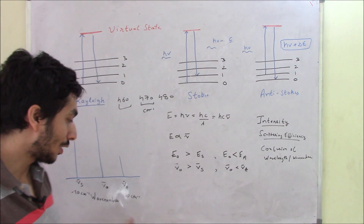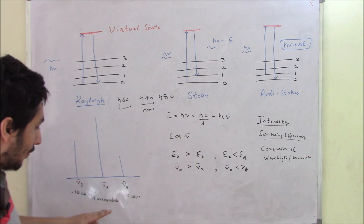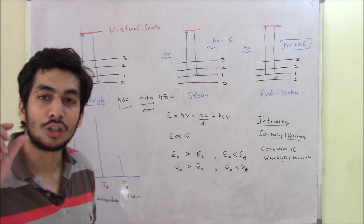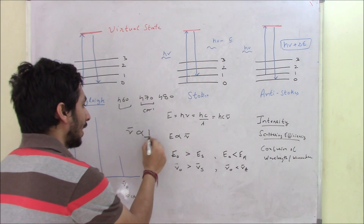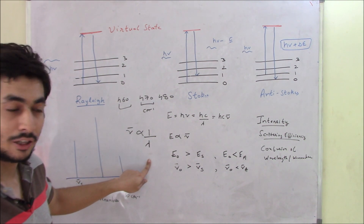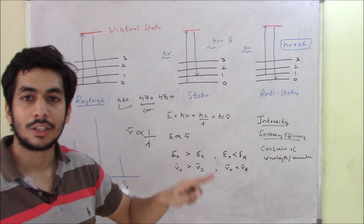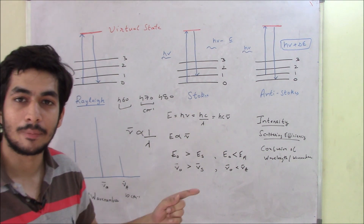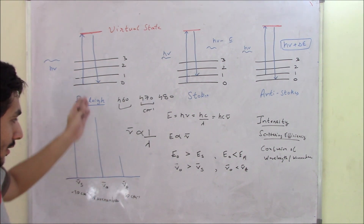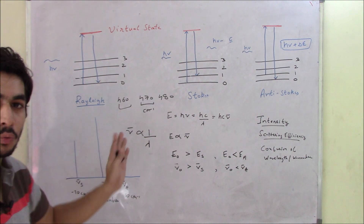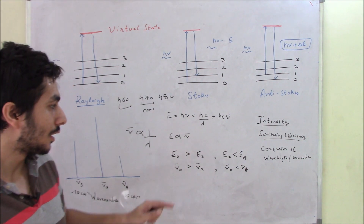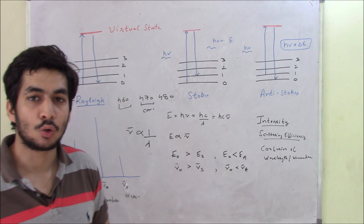Instead of wave number, if we write wavelength on the x-axis, the graph will invert — Anti-Stokes will appear on the left and Stokes on the right. This is because wave number v̄ is proportional to 1/λ, so a higher wave number corresponds to a lower wavelength. Anti-Stokes has a higher wave number but a lower wavelength. So if wavelength is on the x-axis instead of wave number, the positions of Stokes and Anti-Stokes lines swap.